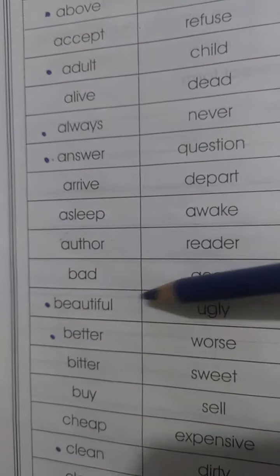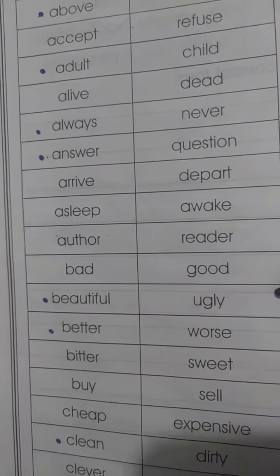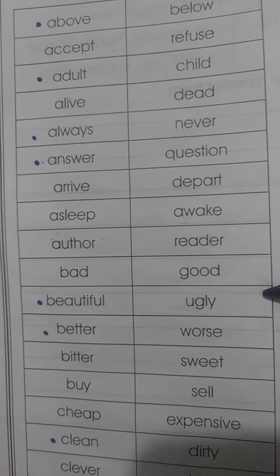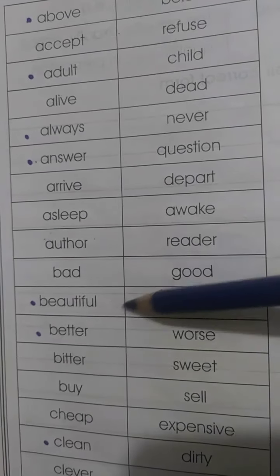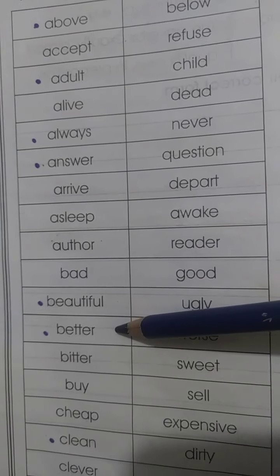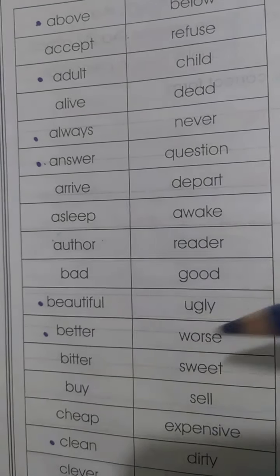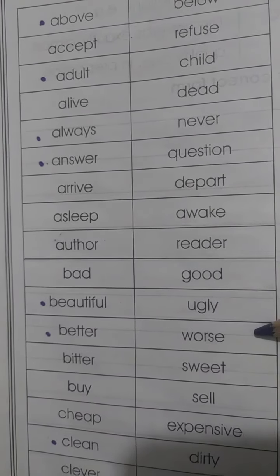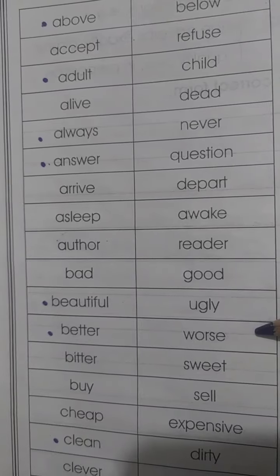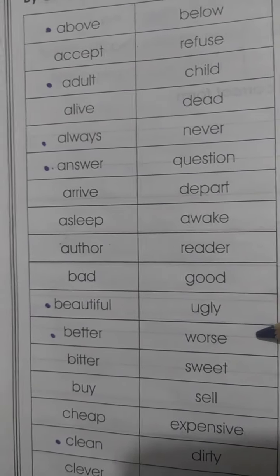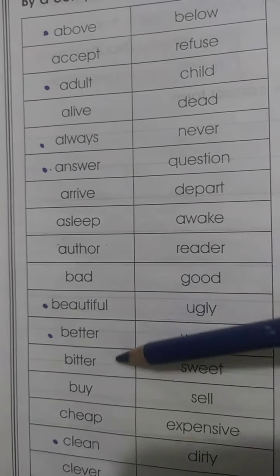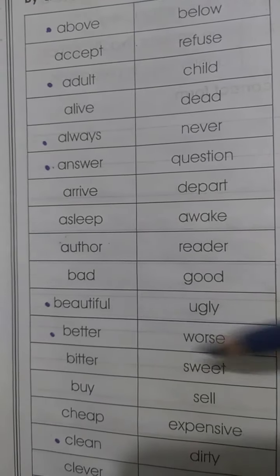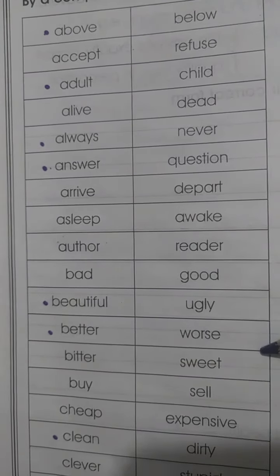'Beautiful' — khubzourat. Antonym is 'ugly' — yianni bura dikhnye wala, meaning not good looking. 'Better' — better refers to the better thing, and 'worse' — yianni buri chiz ko bholta hai, meaning the worse thing. 'Bitter' — karwa. Antonym is 'sweet' — meetha.